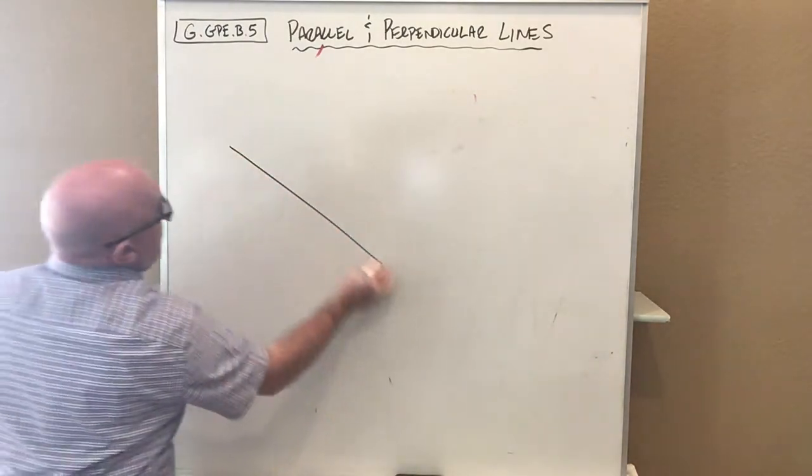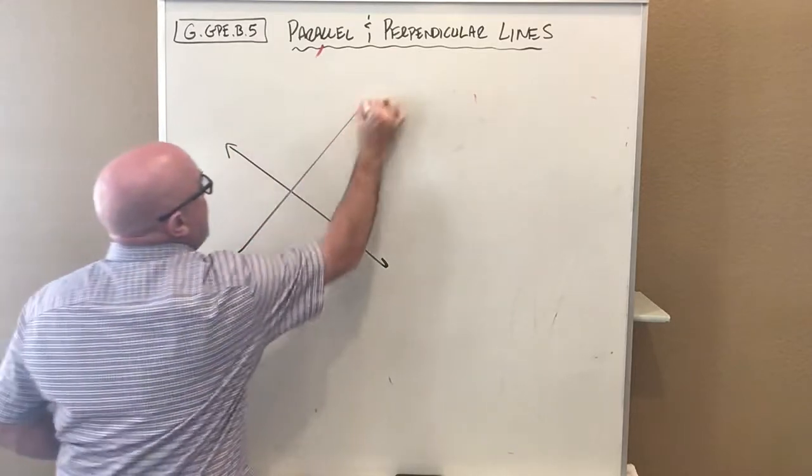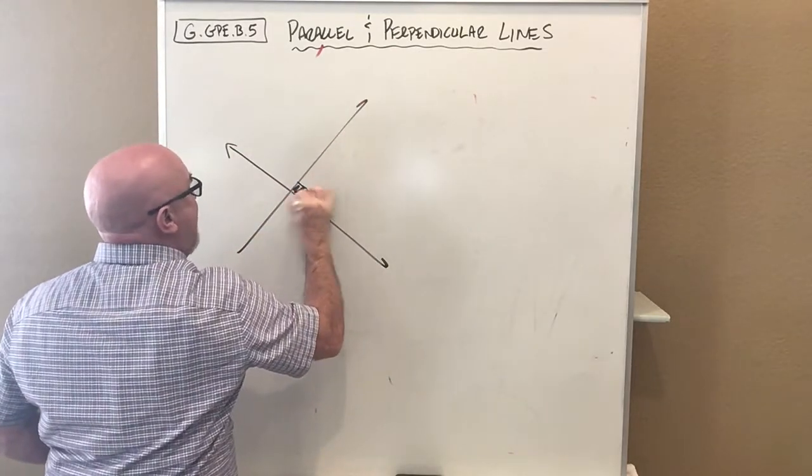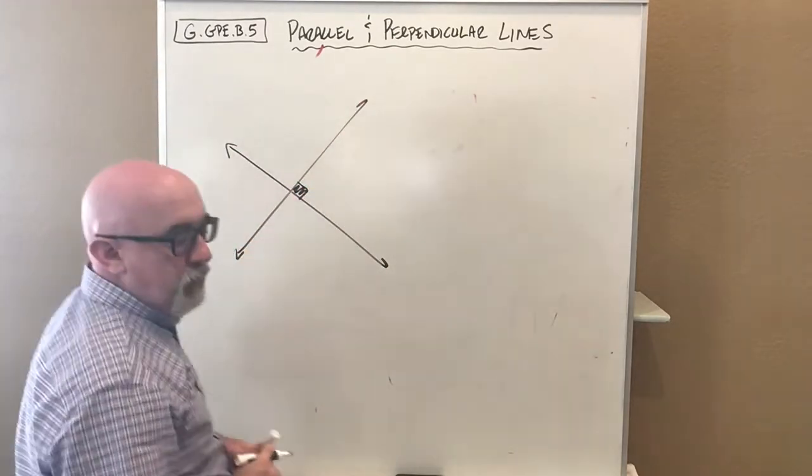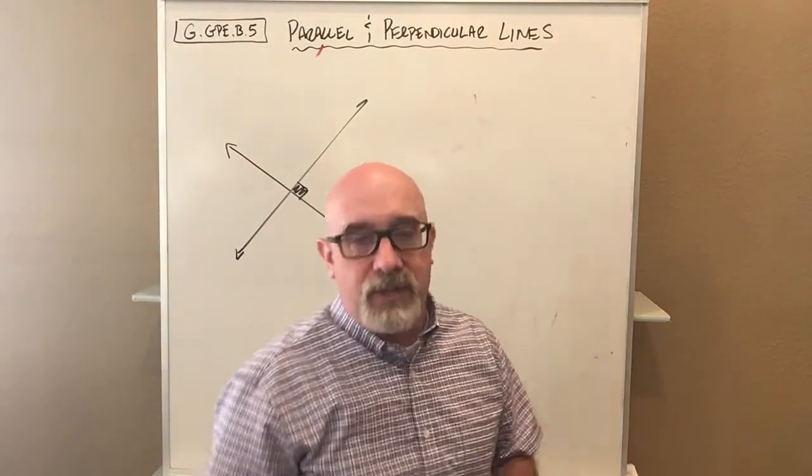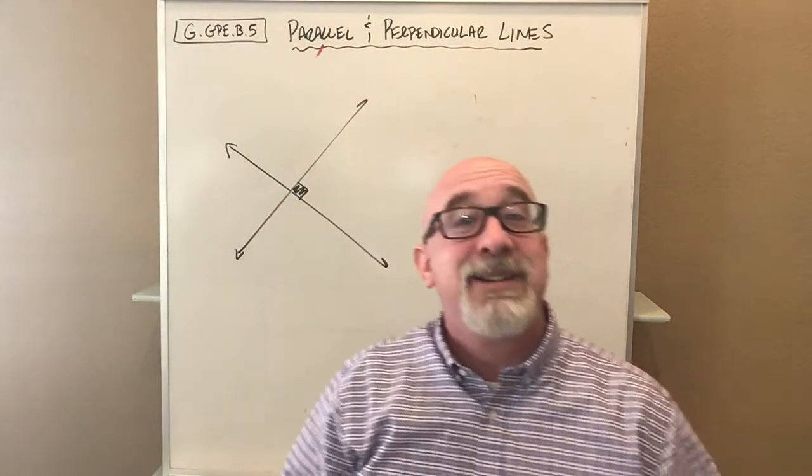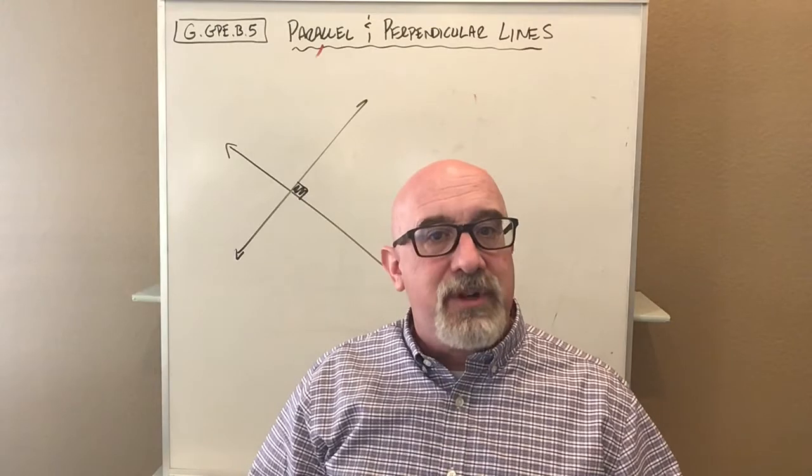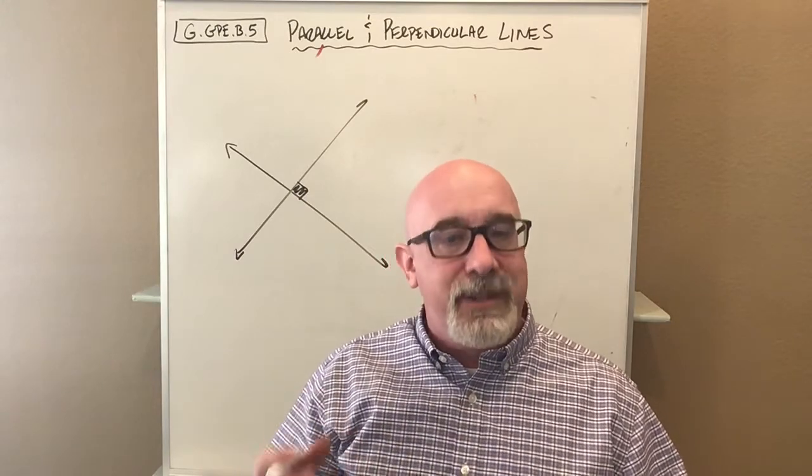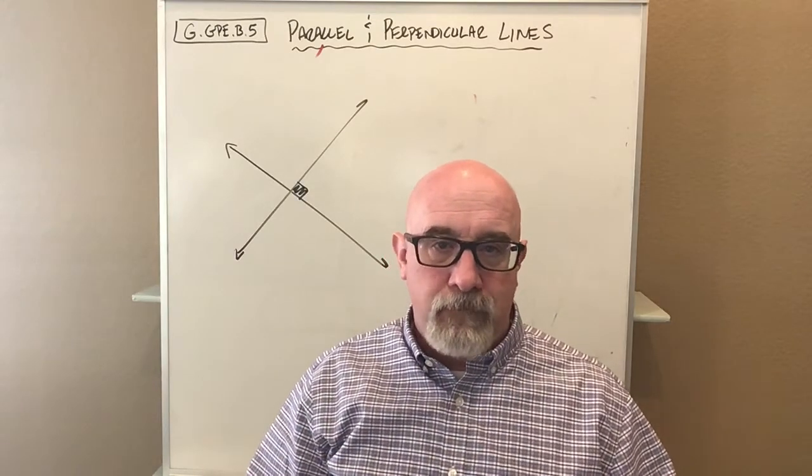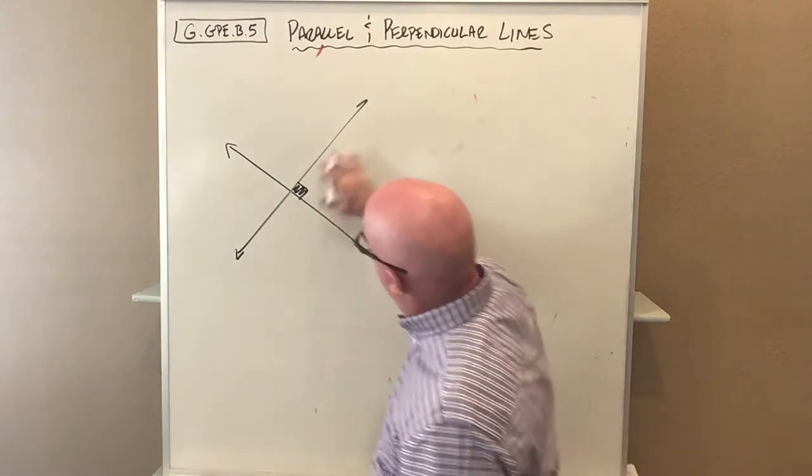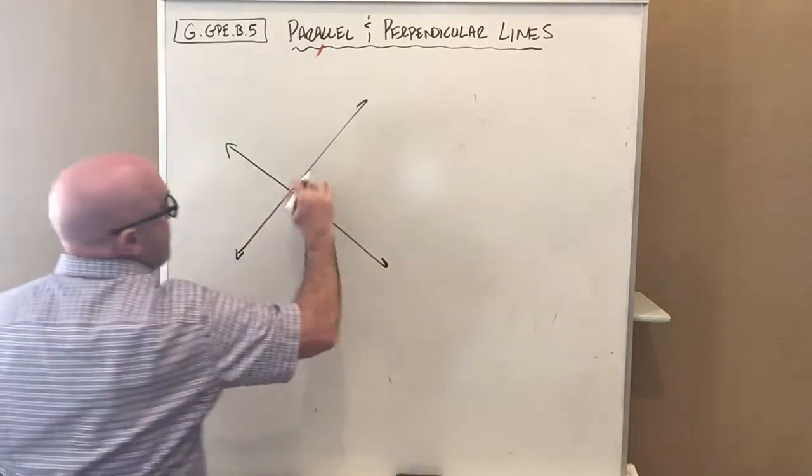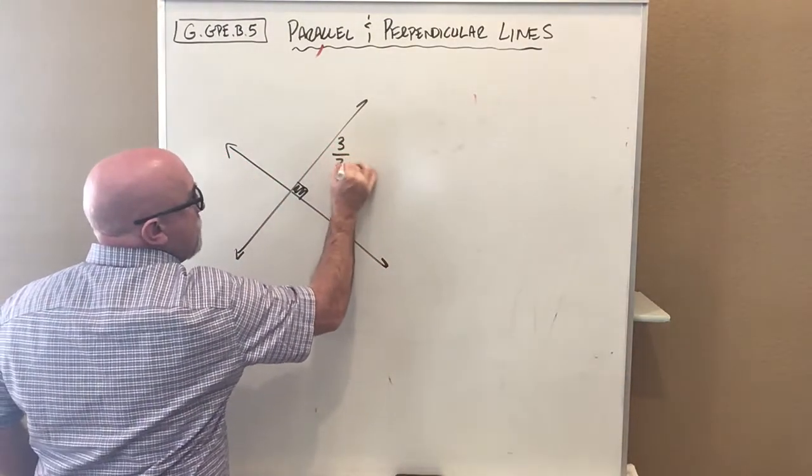Lines that are perpendicular to each other means a 90 degree relationship. What you need to know is that those slopes are negative reciprocals of each other. Let's say this slope is 3/2, positive 3/2.